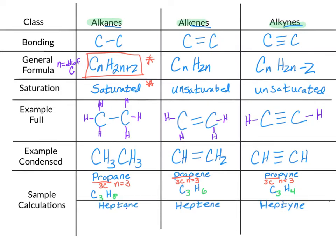Now let's try heptane, heptene, and heptyne. In all cases, 'hept' means seven. So our formula for the alkane will be C₇H₂ˣ⁷⁺², which is C₇H₁₆. For our alkene, we get C₇H₂ˣ⁷, giving C₇H₁₄. And finally, for our alkyne, we have C₇H₂ˣ⁷⁻², which becomes C₇H₁₂.